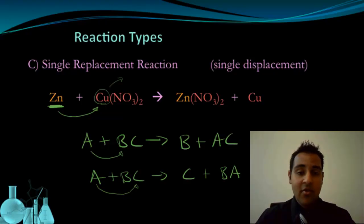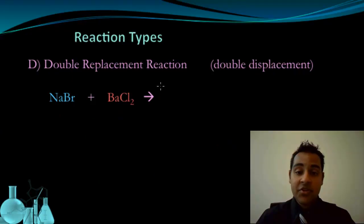The next type of reaction you could come across is called a double replacement reaction, or a double displacement. Either name is fine. In a double replacement reaction, you typically have two ionic compounds as your reactants. And essentially what happens is that the ions exchange places. So the sodium is going to end up with the chlorine, and the bromine is going to end up with the barium.